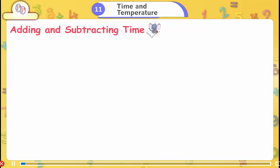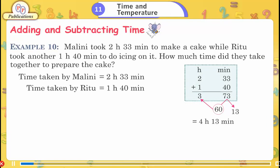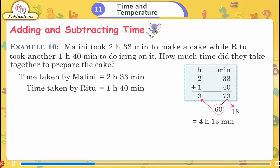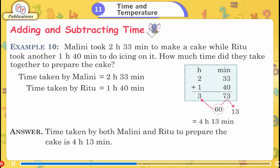Adding and Subtracting Time. Example 10: Malini took 2 hours 33 minutes to make a cake, while Ritu took 1 hour 40 minutes to do icing. How much time did they take together? 2h 33m + 1h 40m = 3h 73m. Since 73 minutes = 60 + 13, the total is 4 hours 13 minutes.